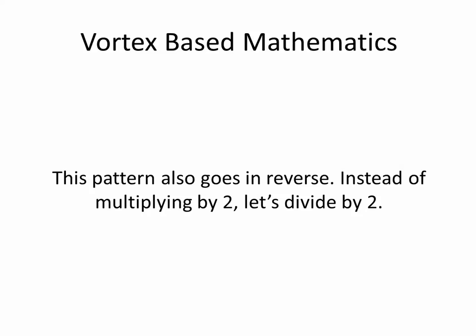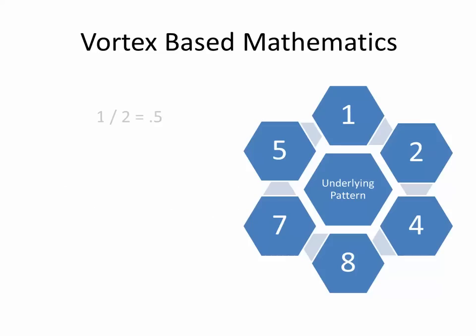Instead of multiplying by 2, let's divide by 2. 1 divided by 2 equals 0.5. 0.5 divided by 2 equals 0.25. 2 plus 5 equals 7. 0.25 divided by 2 equals 0.125. 1 plus 2 plus 5 equals 8.